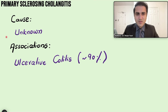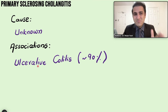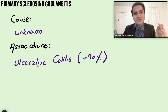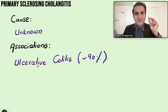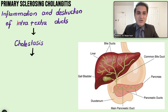The cause of primary sclerosing cholangitis is not known. However, it has a strong association with ulcerative colitis — 90% of patients with PSC also have ulcerative colitis. If a patient with inflammatory bowel disease has elevated LFTs, you must look out for primary sclerosing cholangitis.